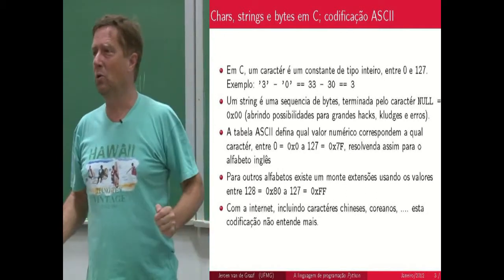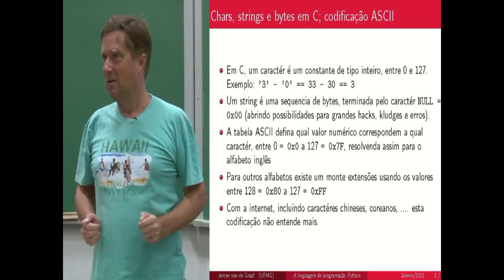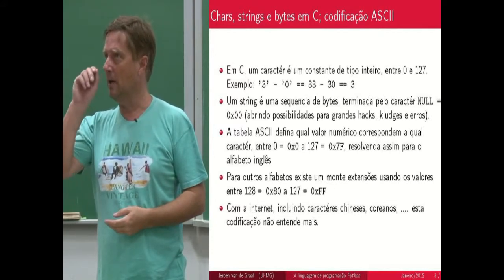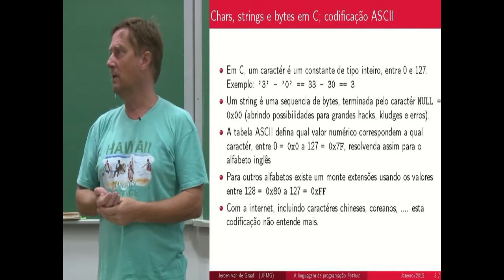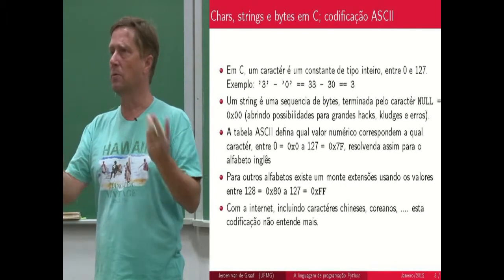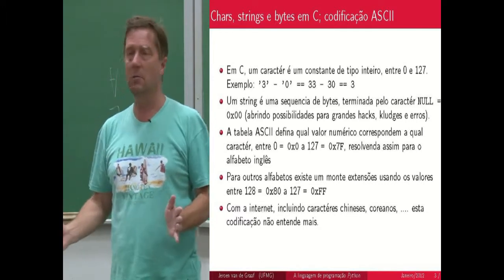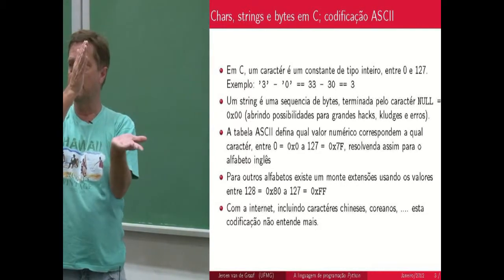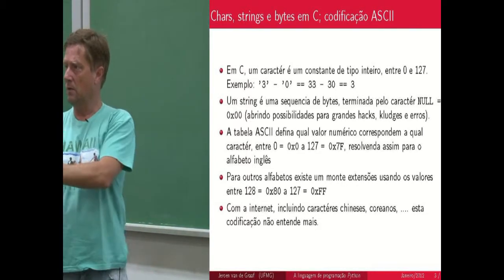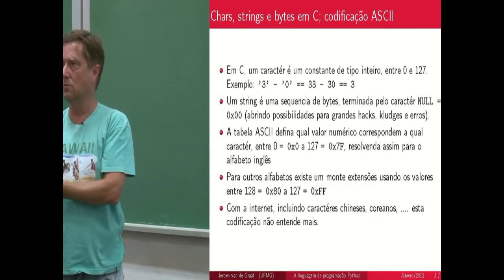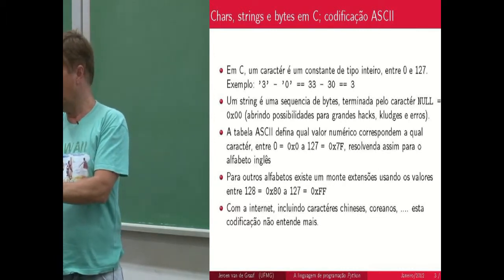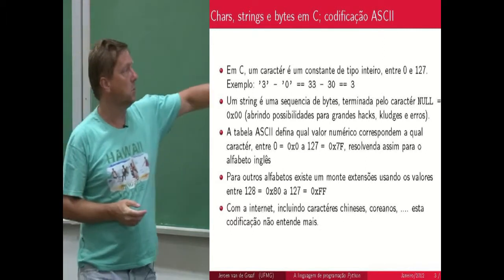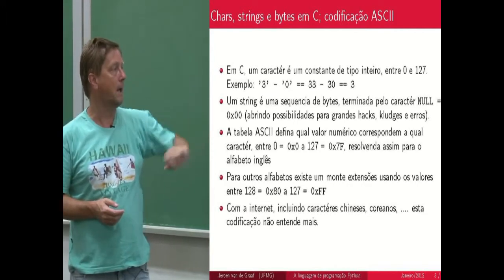O mundo é maior do que a Inglaterra ou os Estados Unidos e tem mais alfabetos. O que acontecia é que para cada língua diferente — francês, português, outras línguas — havia uma extensão. O ASCII usa os valores de 0 até 127, então você tinha ainda de 128 até 255 para codificar os outros alfabetos. Havia um monte de padrões diferentes para cada linguagem.